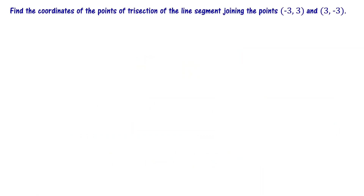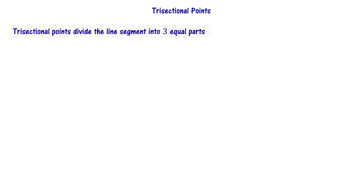Find the coordinates of the points of trisection of the line segment joining the points minus 3 comma 3 and 3 comma minus 3. First, let us recall what trisectional points mean. The trisectional points divide the line segment into three equal parts. Please note this.